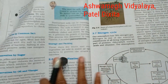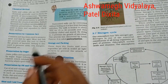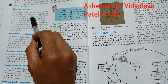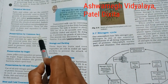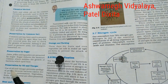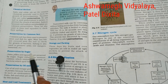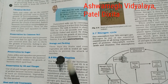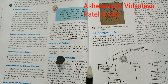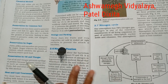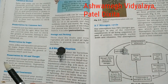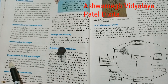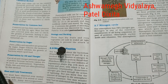Then we learn about food poisoning and food preservation. In the last lecture we learned about some methods of food preservation like chemical method, preservation by common salt, and preservation by sugar. Now we learn about the fourth method of preservation: preservation by oil and vinegar.